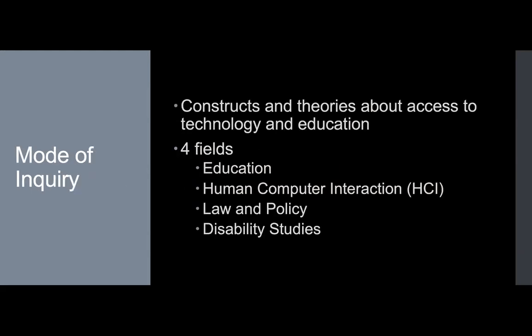When considering how access to technology-enhanced K-12 education for disabled students should be conceptualized, I examine the constructs and theories about access to technology and education from four key fields: HCI, law and policy, education, and disability studies, because all four fields offer unique, useful, and sometimes mandatory insight into the topic. After identifying the constructs of access to technology and education from the literature in the four aforementioned fields, I examined points of convergence, divergence, and fusion across disciplinary lines.